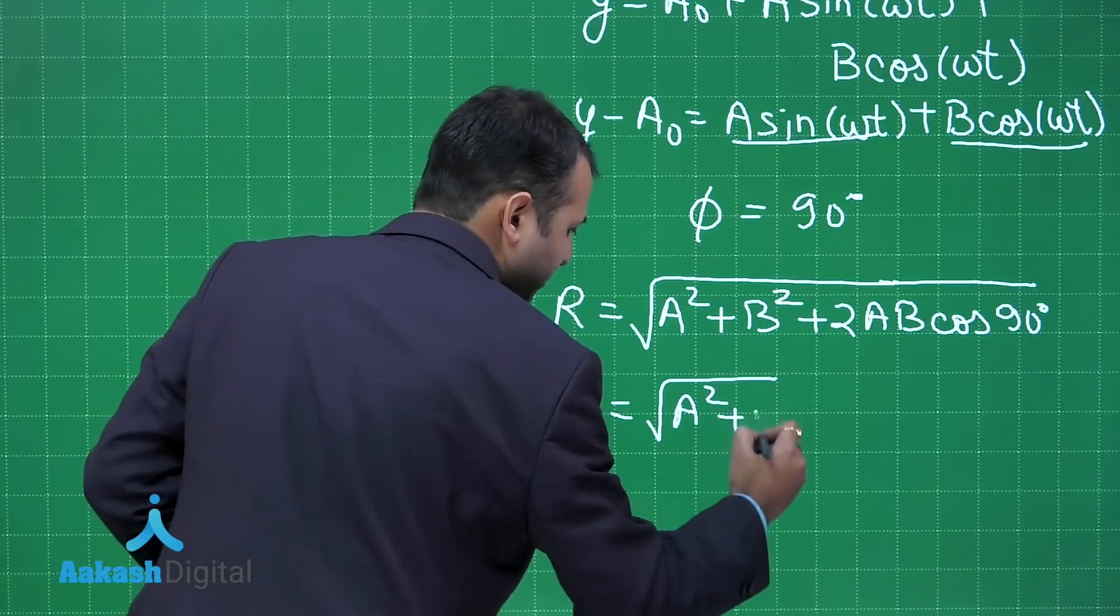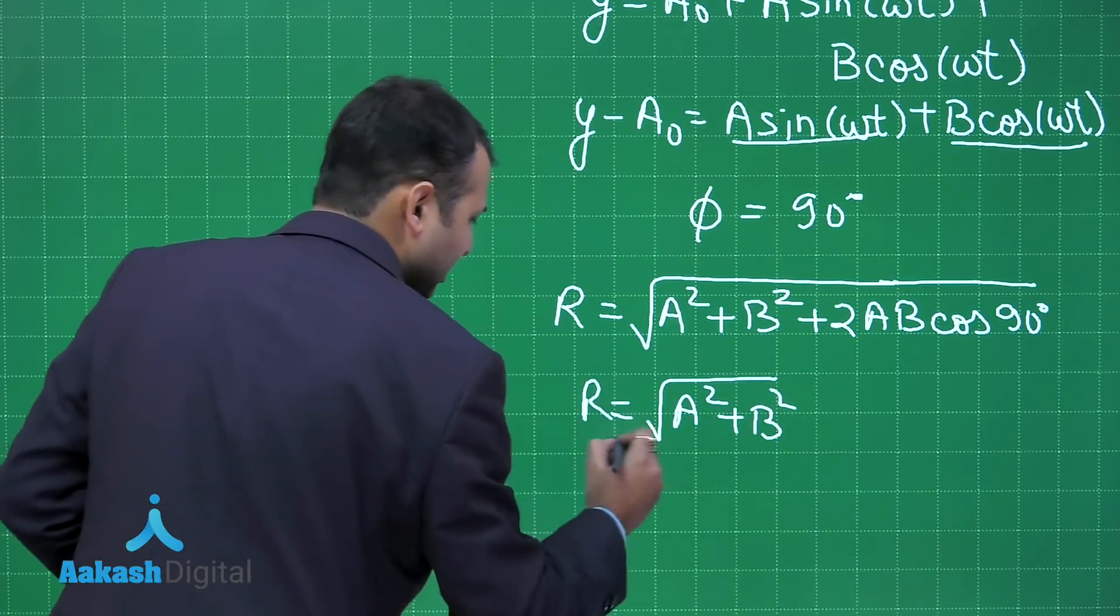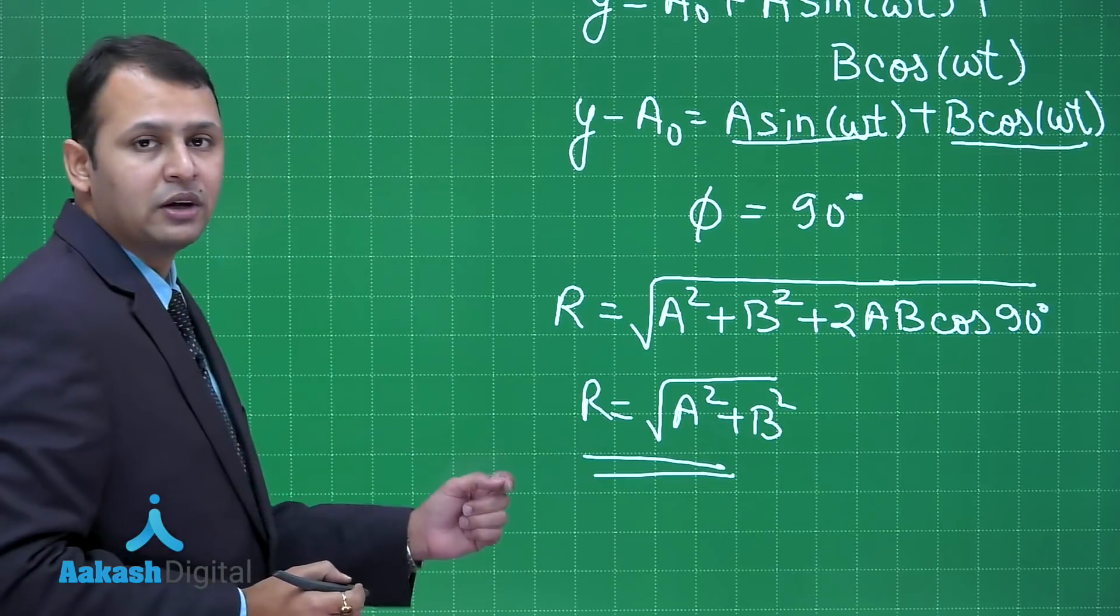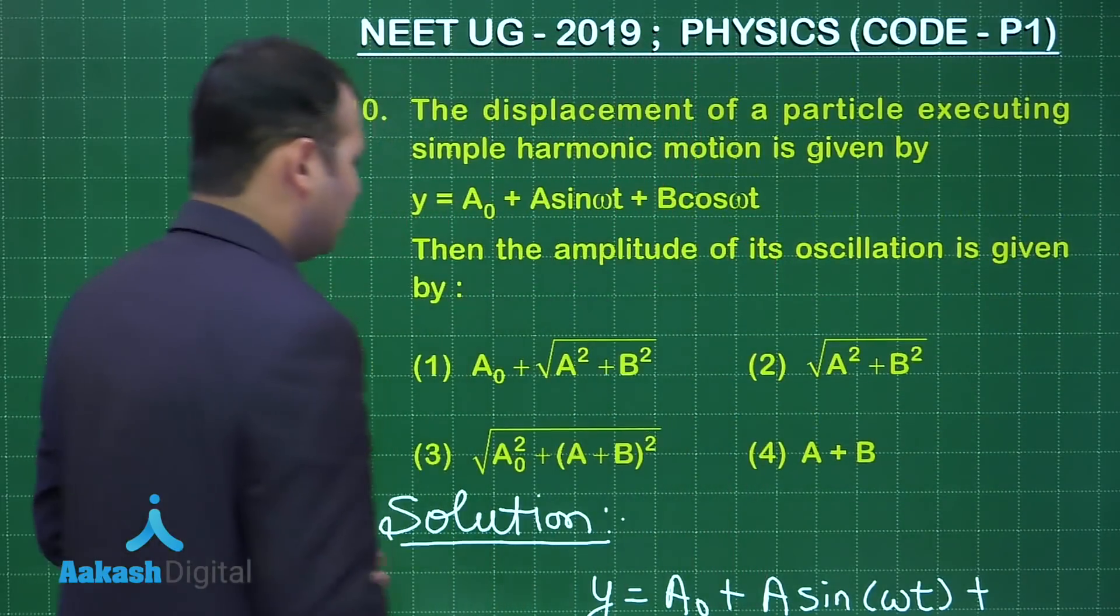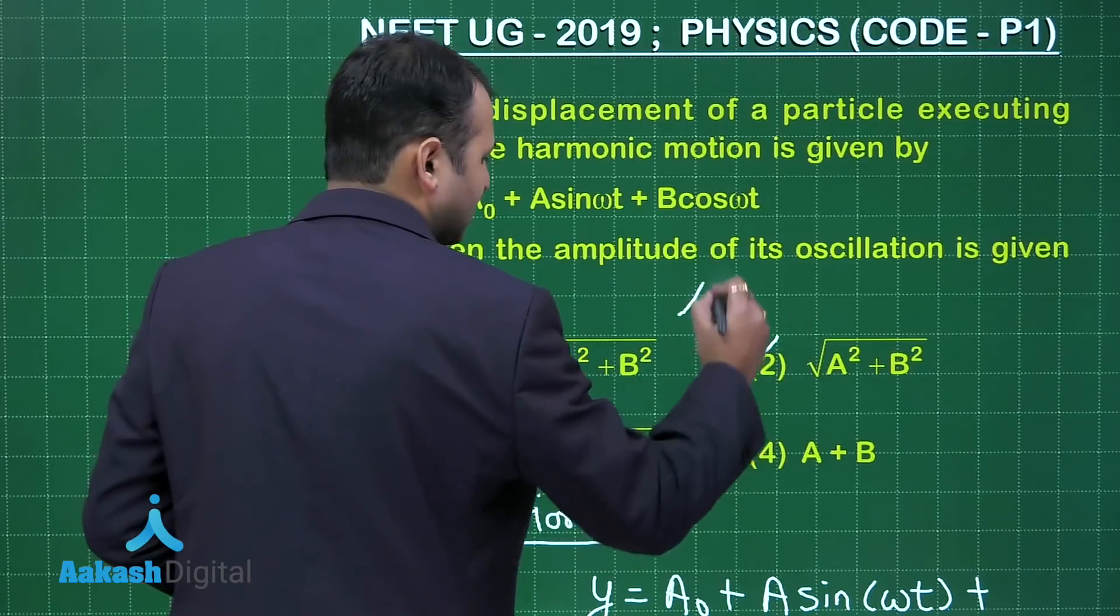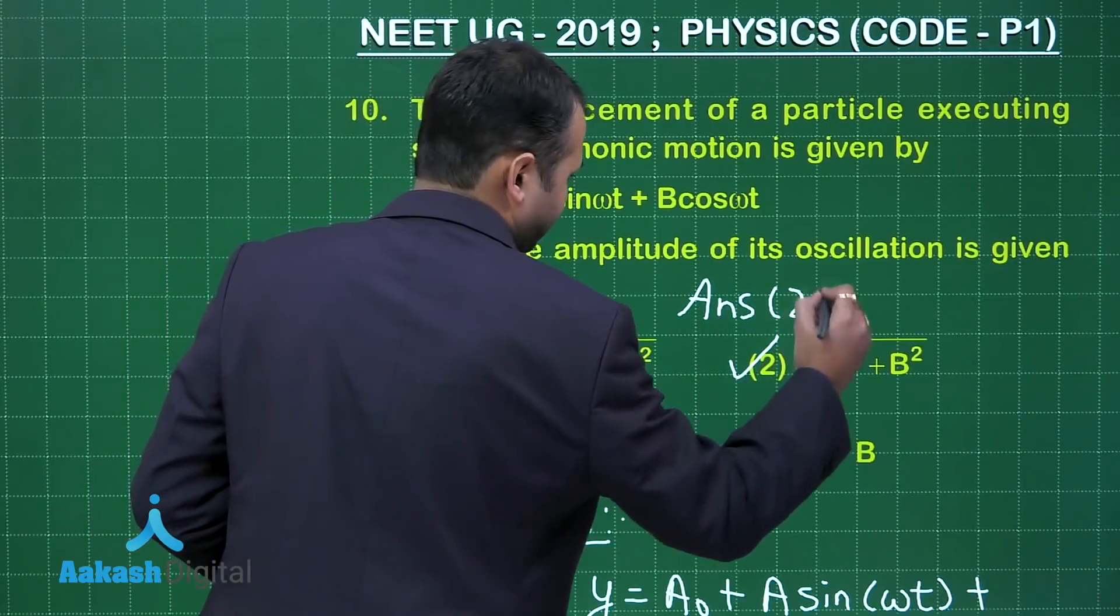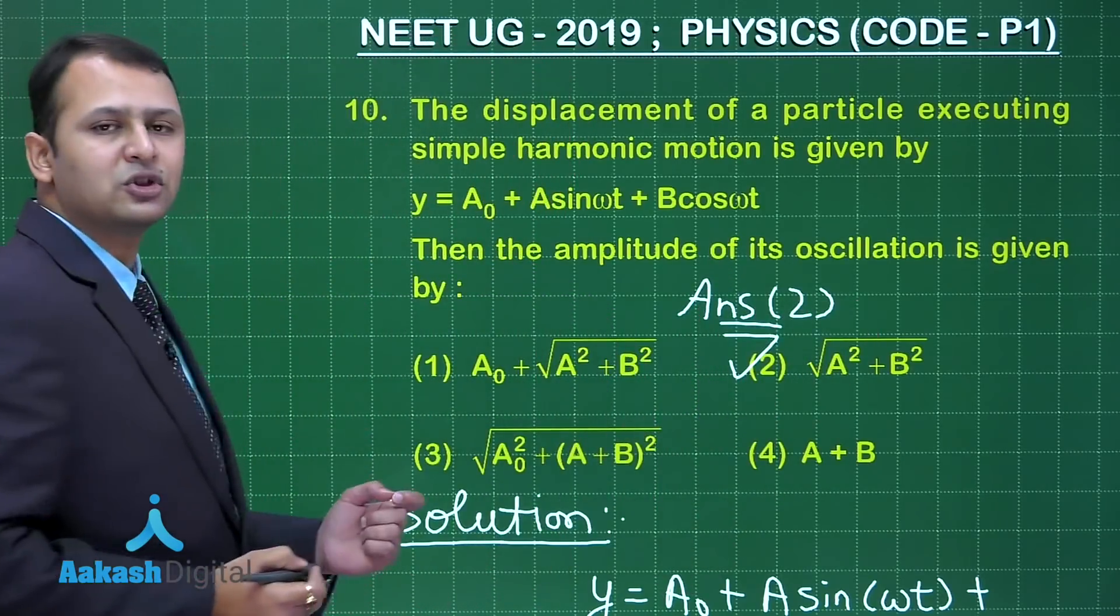And this will result into under root of A² plus B². This is the resultant amplitude. Let's see which is the best suited option among the four. Yes, option number 2 is the right answer.